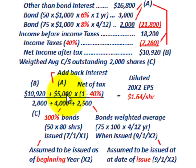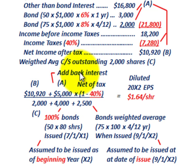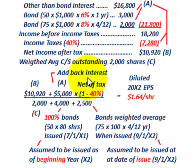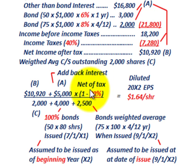That $5,000 interest must be added back net of tax. Since our tax rate is 40%, we multiply $5,000 × (1 − 40%) = $5,000 × 60% = $3,000 added back to the numerator. This reflects the fact that upon conversion, there would be no interest expense paid on those bonds.